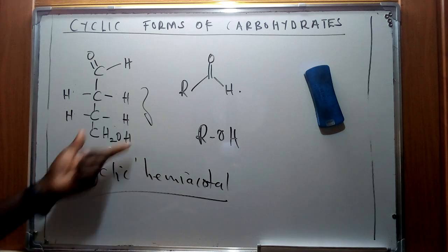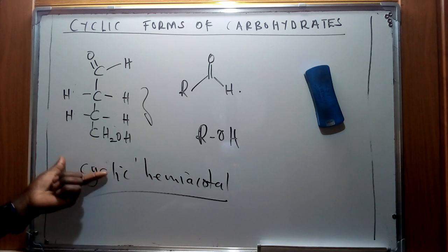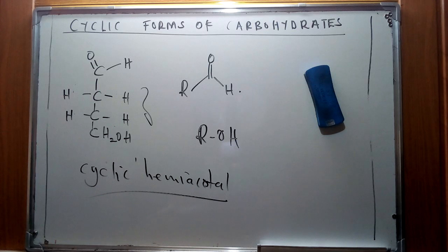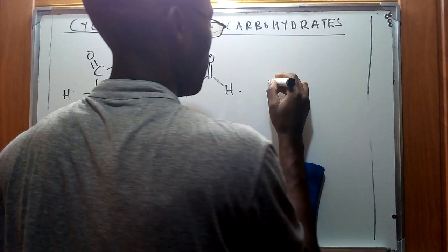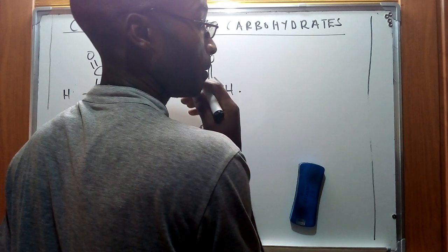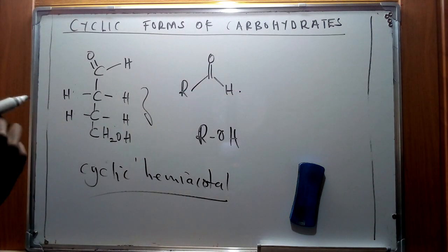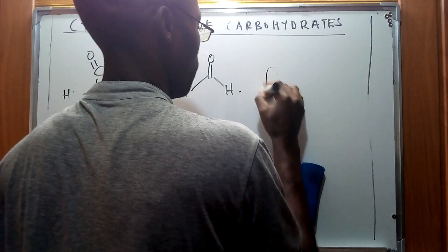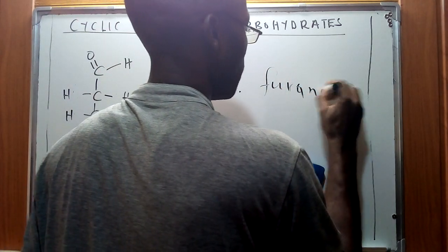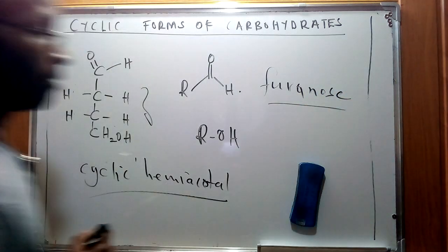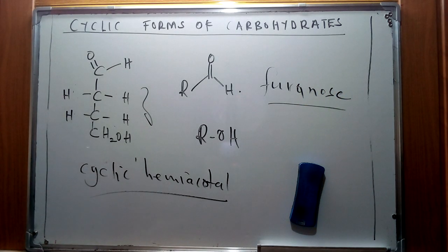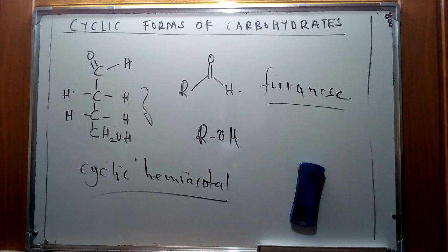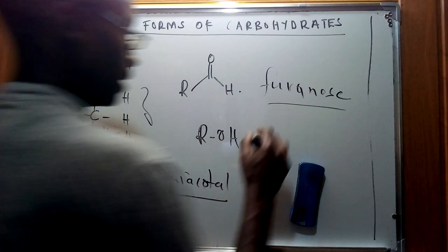For five-membered hemiacetals we are going to refer to them by a different name. From the concept of furan, we are going to derive the name for the five-membered ring as furanose, and for a six-membered ring — which appears dominantly for the two specific cyclic forms — we're going to refer to it as pyranose.